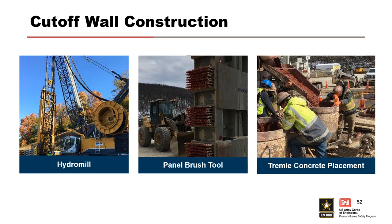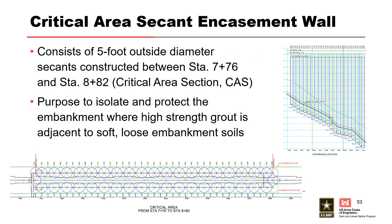Red dye was used in closure panel concrete to aid in evaluating joint quality. Cased drilled shafts were installed to encase the embankment area where the cutoff wall needed to be constructed through the area previously damaged by the 1957 incident. This was done to eliminate the risk of slurry used with the hydromill possibly initiating erosion in the damaged embankment.